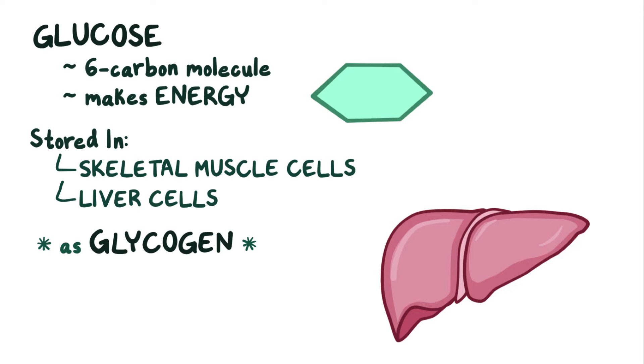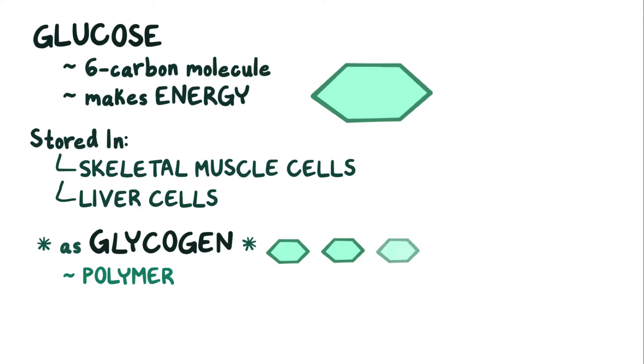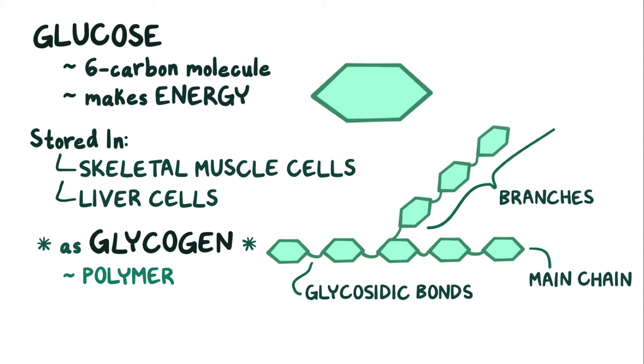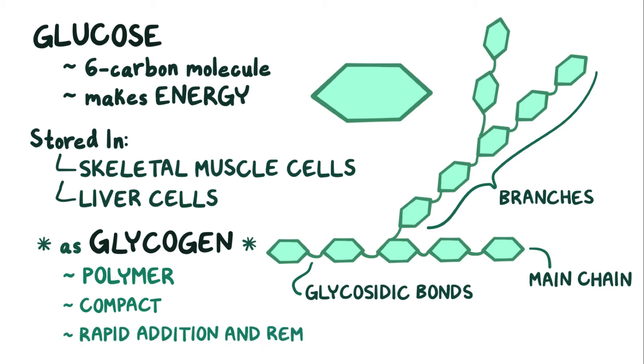Glycogen is basically an enormous molecule or polymer that's made up of glucose molecules linked together by glycosidic bonds. You can think of glycogen having a main chain and there being multiple branches sprouting off of it. These branches allow glycogen to be compact and capable of rapid addition and removal of glucoses.